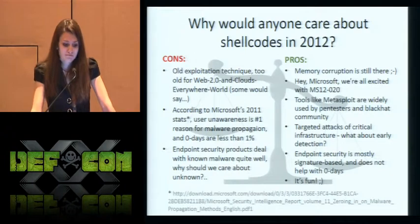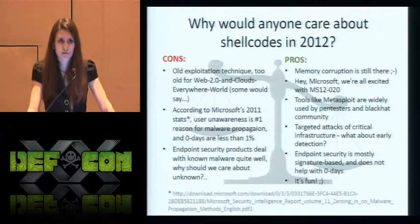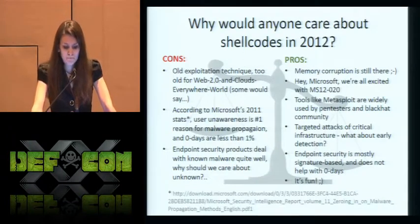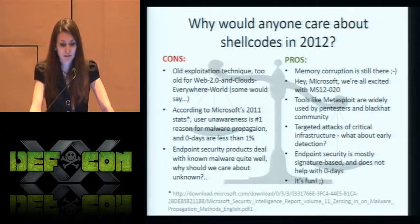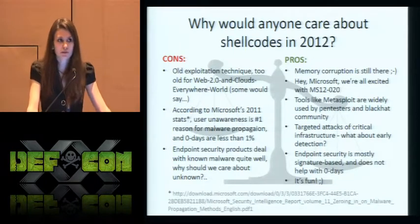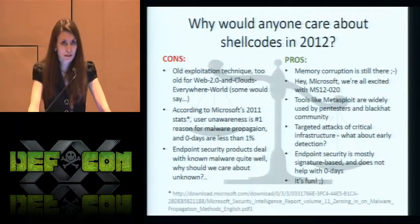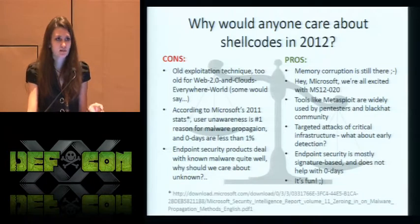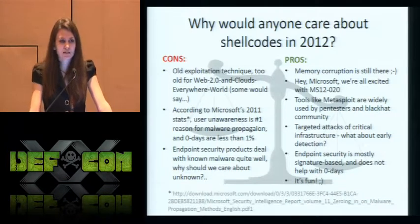But let's look at the other side of the coin. Memory corruption is still there. We still have a huge bunch of code written in C. Programmers still make mistakes, still introduce vulnerabilities in their code and products. We remember Microsoft's report about vulnerabilities in the remote desktop protocol. Tools like the Metasploit framework are widely used by black hat communities, scientists, and pentesters. We shouldn't forget about targeted attacks on critical infrastructure such as planes, trains, and water pumps.